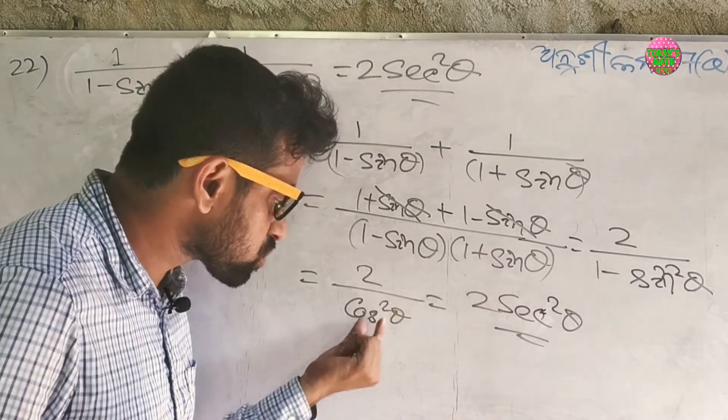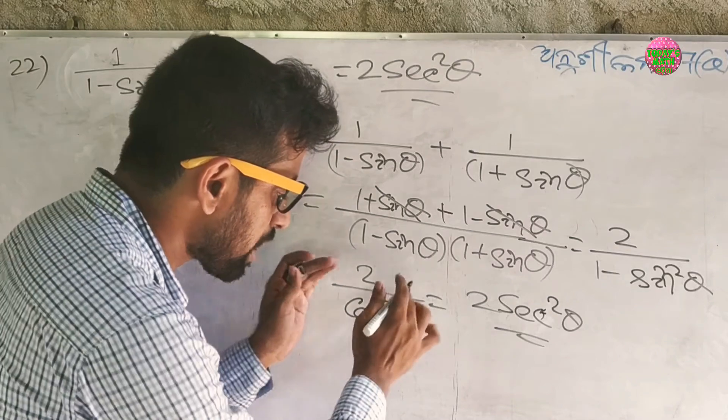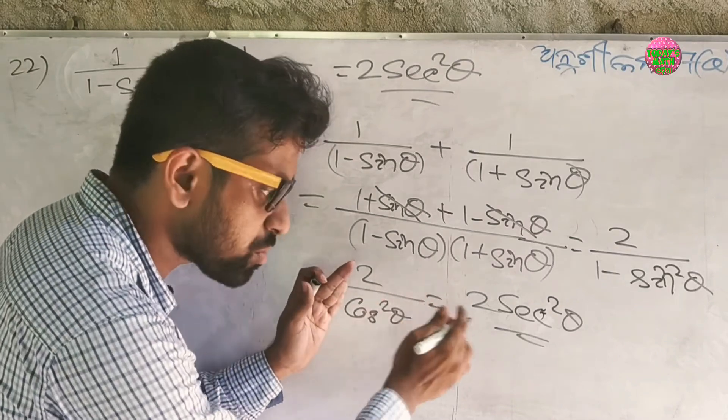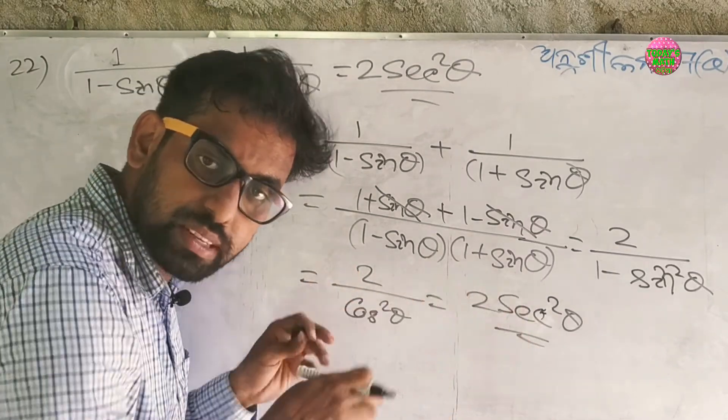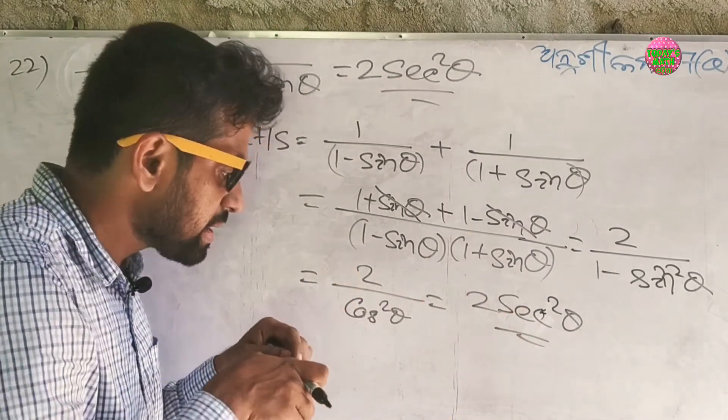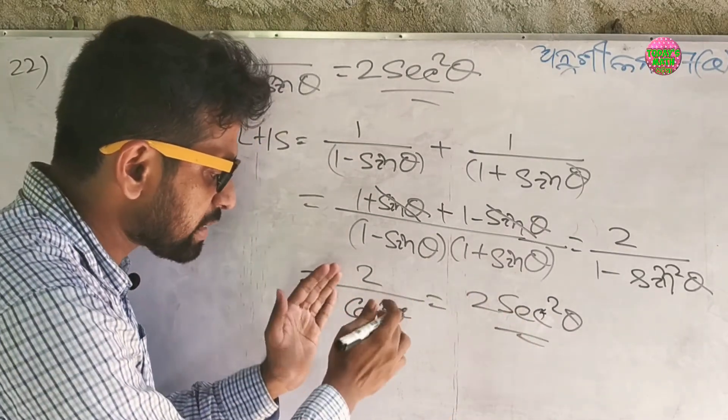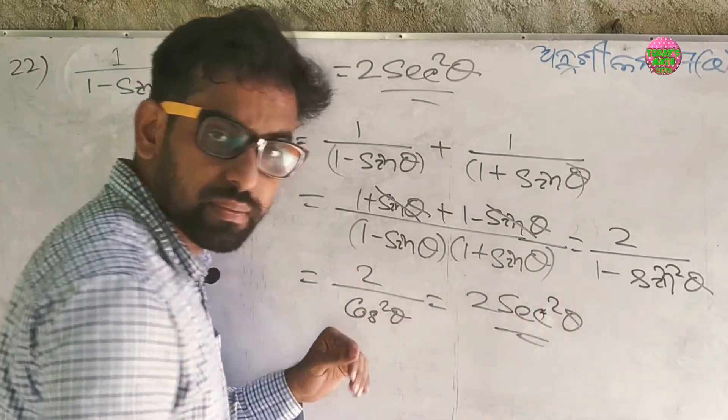1 by cos squared theta equals sec squared theta. Now you can move the square, giving us 2 sec squared theta, which equals the RHS.